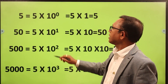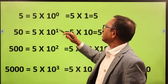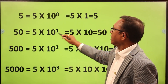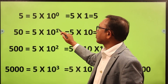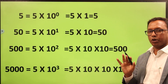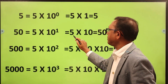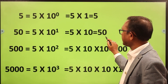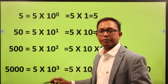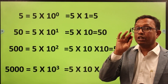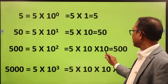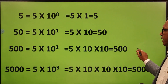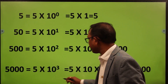What is 5 to the power 0? 5 into 10 to the power 0. 5 into 1 is equal to 5. So 5 into 10 to the power 1 — 5 into 10 is equal to 50. 10 to the power 1 is equal to 10. What is 50? Exactly. 500 is equal to 5 into 10 into 10. What is 500? Exactly. We can explain this.